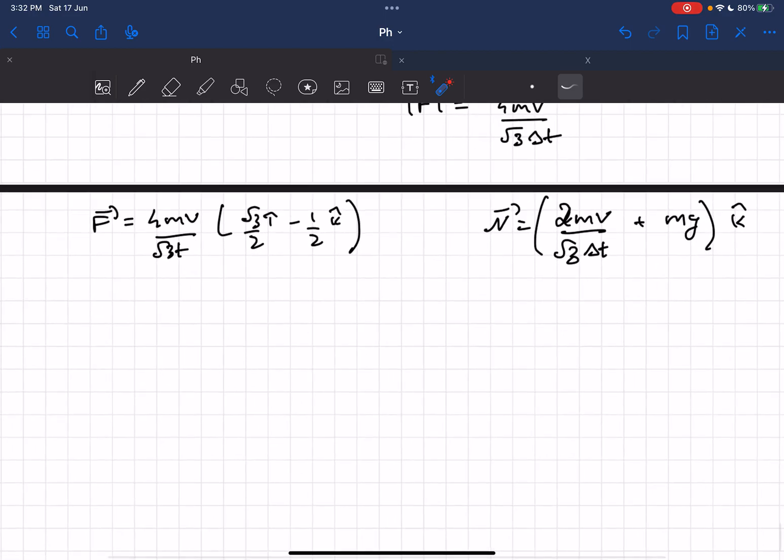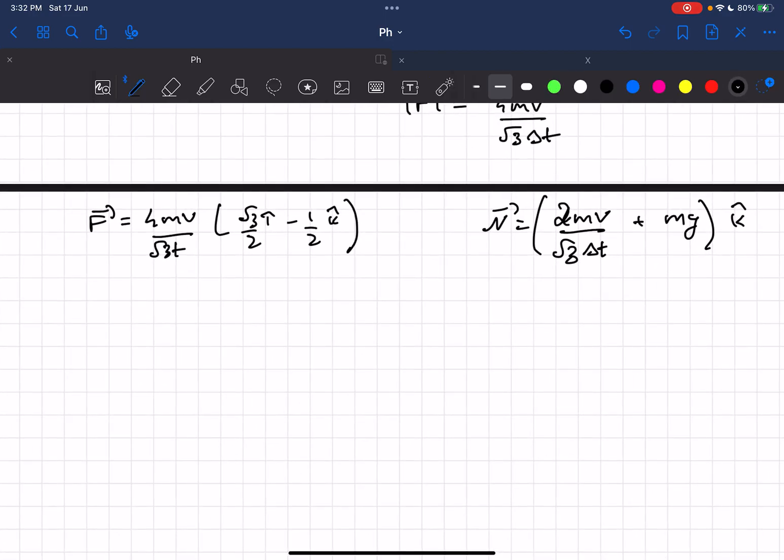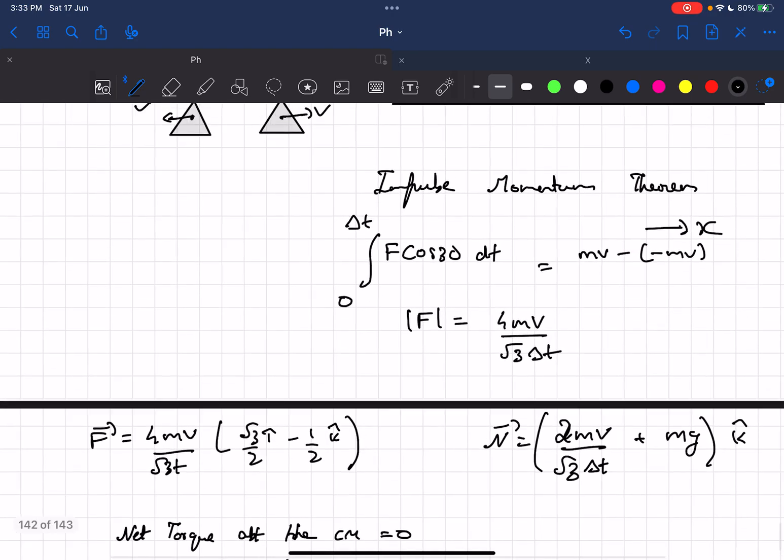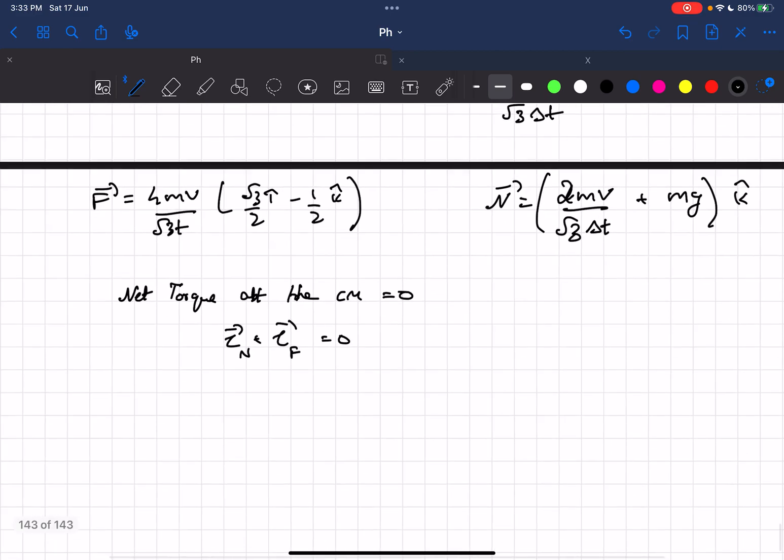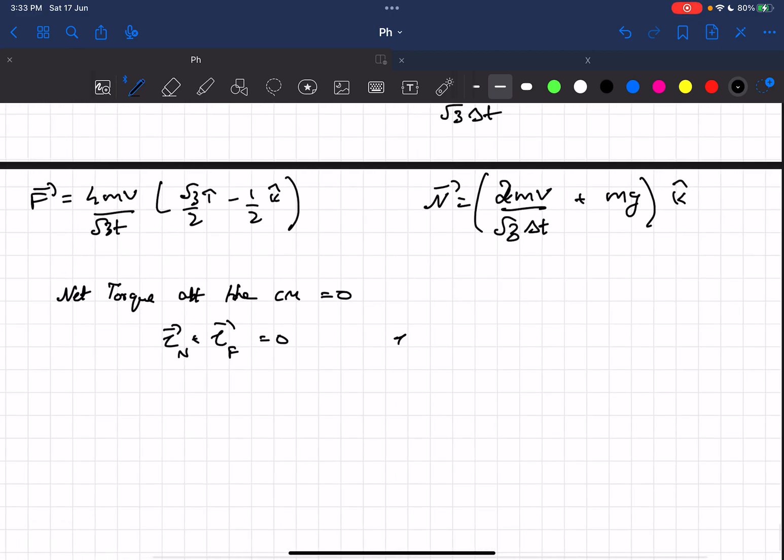So as we know the net torque about the center must be zero. The net torque about the center of mass should be zero, which means the torque of normal plus the torque due to force F equals zero, because the torque of mg is anyway zero because it's passing through the center of mass.